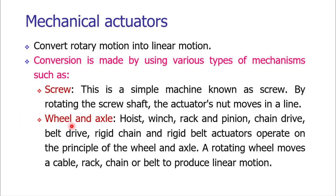We may also have wheel and axle based arrangements. There are many variants: hoist, winch, rack and pinion, chain drive, belt drive, rigid chain, and belt actuators. In a wheel and axle arrangement, we rotate the wheel — either manually or otherwise — and that rotation is utilized to produce linear motion of its links, which may be a cable, rack, chain, or belt.